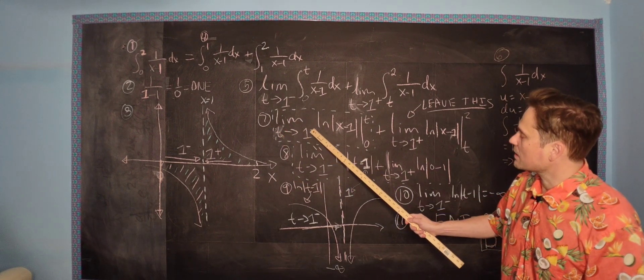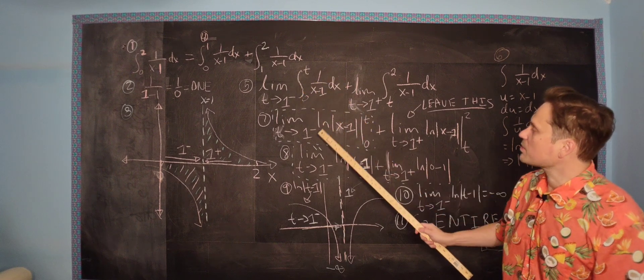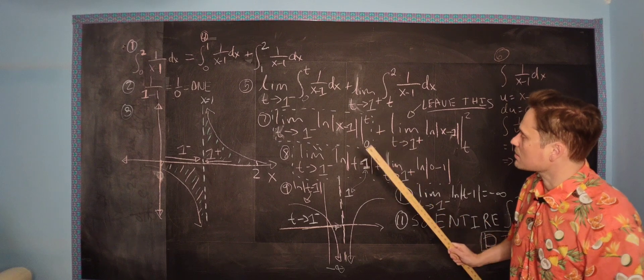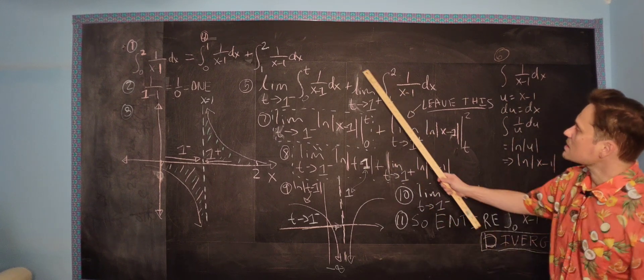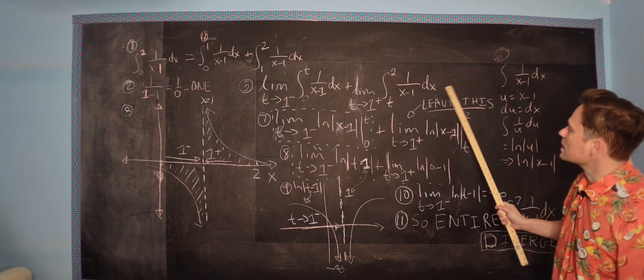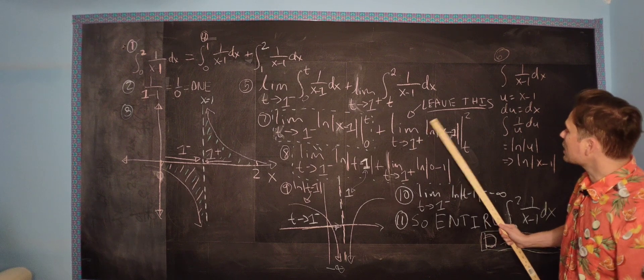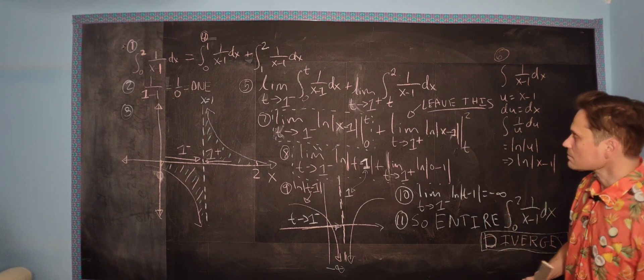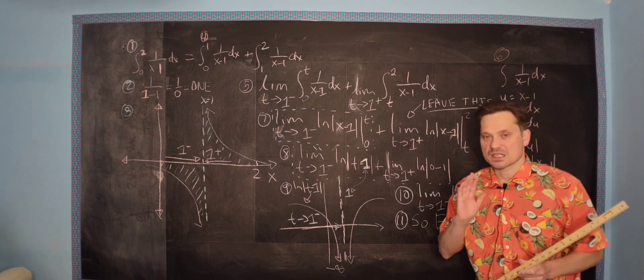Now that we have this anti-differentiated, go back to step 7. Limit as t approaches 1 from the left side, and now this integral has been replaced with ln of the absolute value of x minus 1, with the limits from 0 to t. And the same thing applies with this integral. So you're going to do the limit as t approaches 1 from the right side of ln of x minus 1 between t and 2.